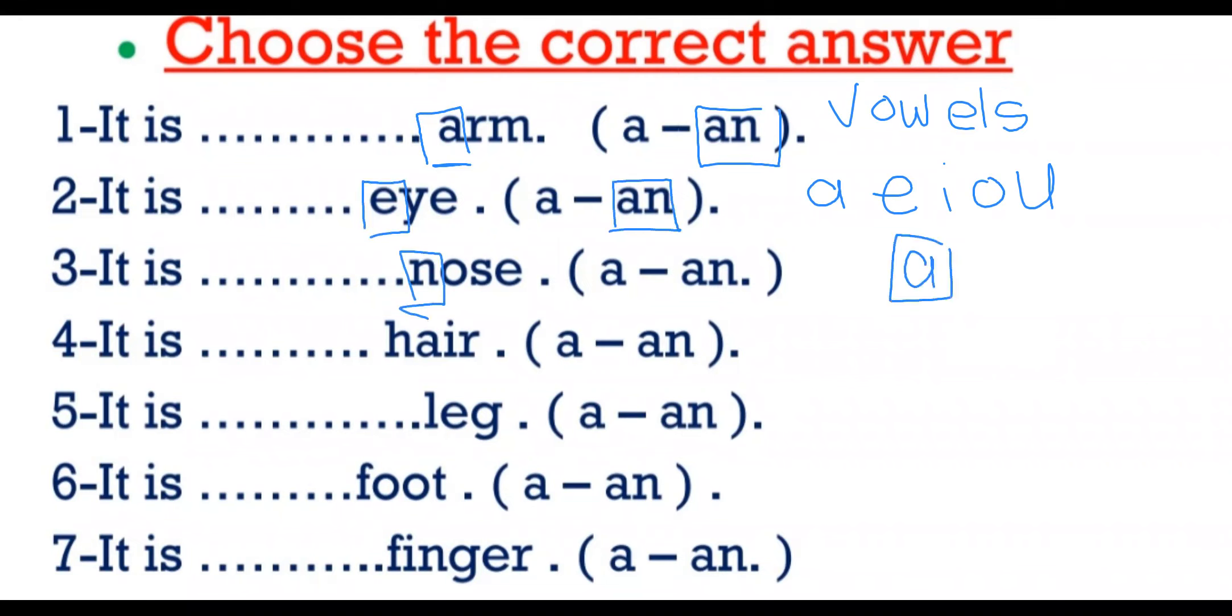Consonants like P, C, F, G - consonant letters. So we use A.